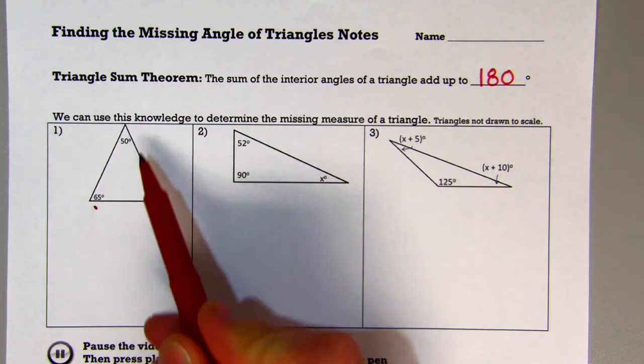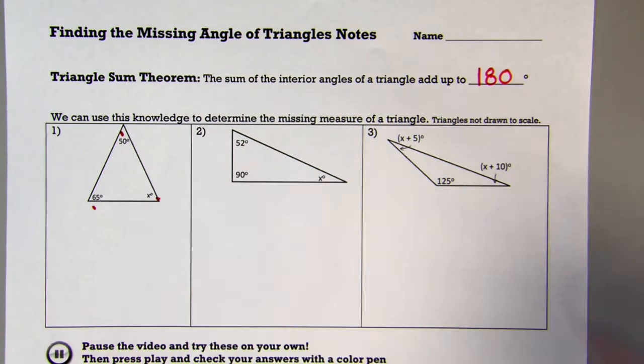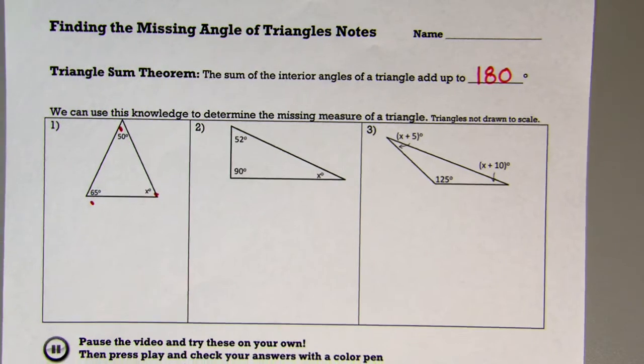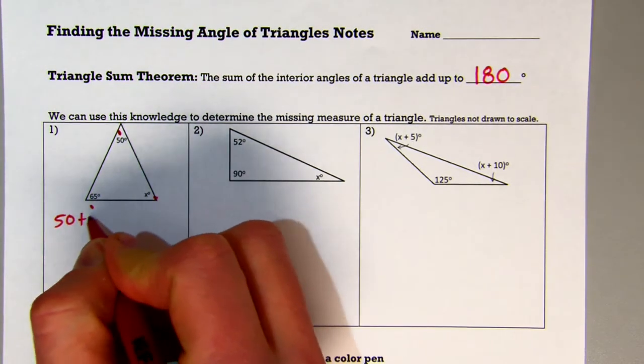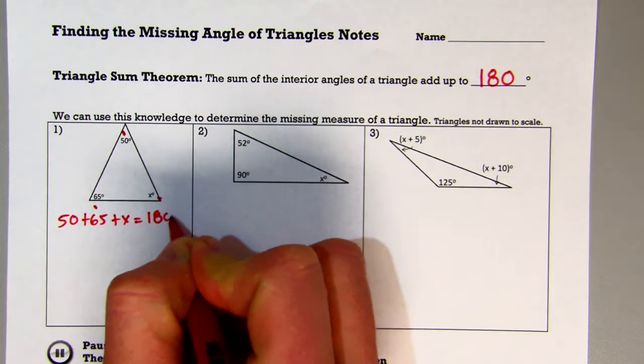We're going to say that this angle, this angle, and this angle are all going to equal 180 degrees together. So I could say 50 plus 65 plus x is equal to 180 degrees.